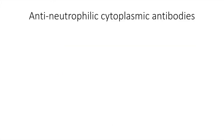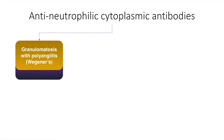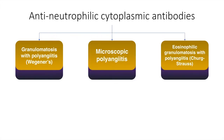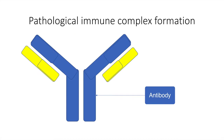The conditions associated with anti-neutrophilic cytoplasmic antibodies include granulomatosis with polyangiitis, microscopic polyangiitis, and eosinophilic granulomatosis with polyangiitis, formerly called Churg-Strauss disease. Vasculitis may also be caused due to pathological immune complex formation and deposition.